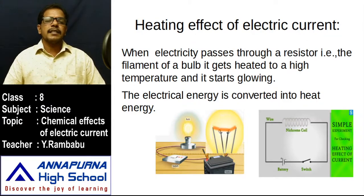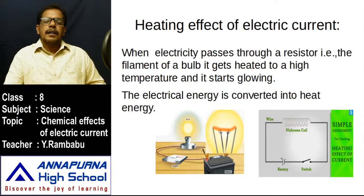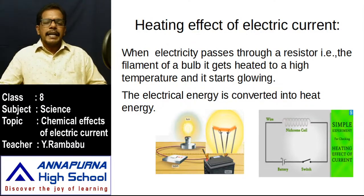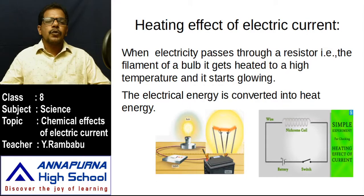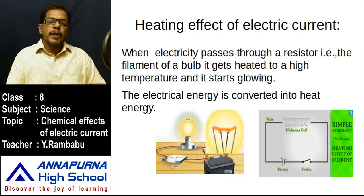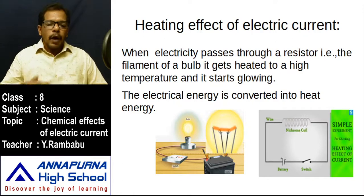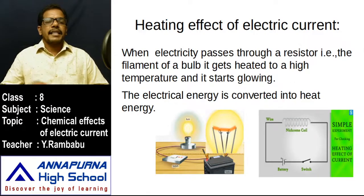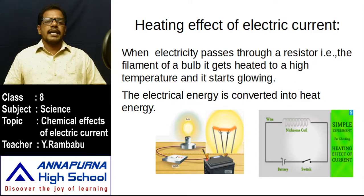While performing the activity to test whether electricity passes through liquids, if you use an incandescent bulb it needs a higher voltage to glow. Since we use a 6-volt or 9-volt battery, instead of an incandescent bulb we may use an LED as the tester indicator. The magnetic effect of electric current and chemical effect of electric current will be learned in the next class.